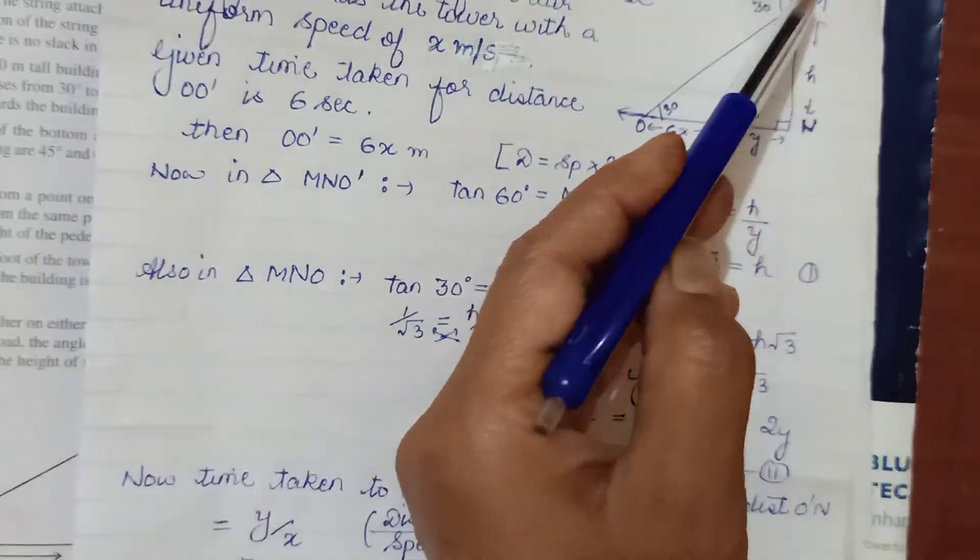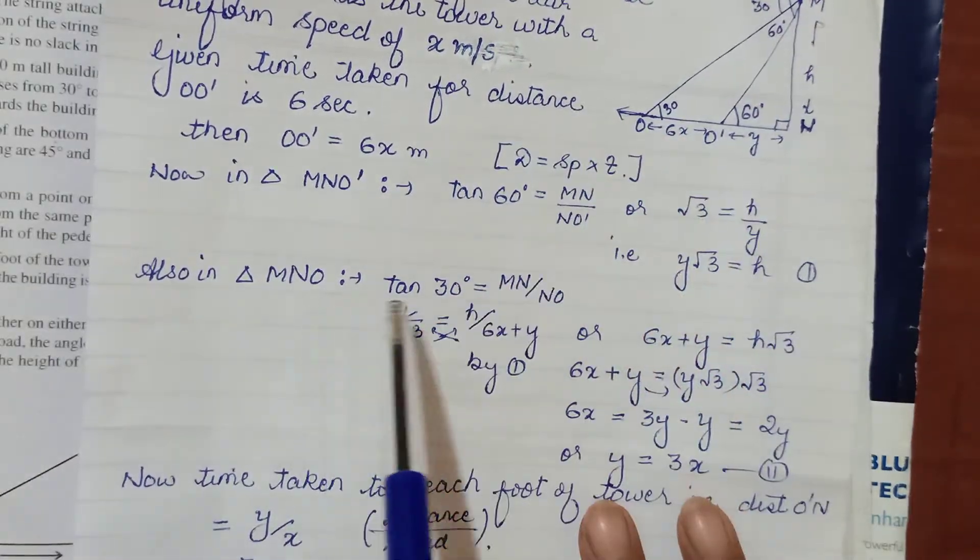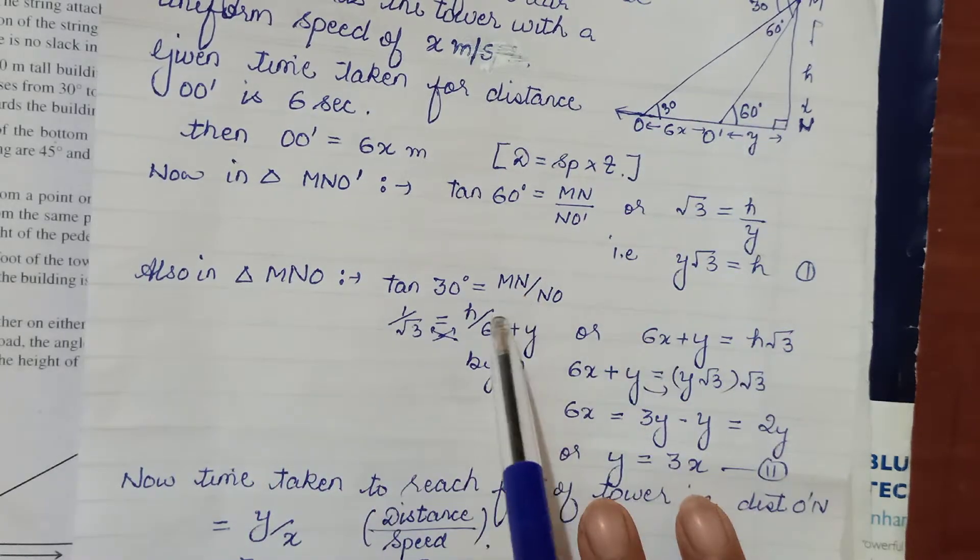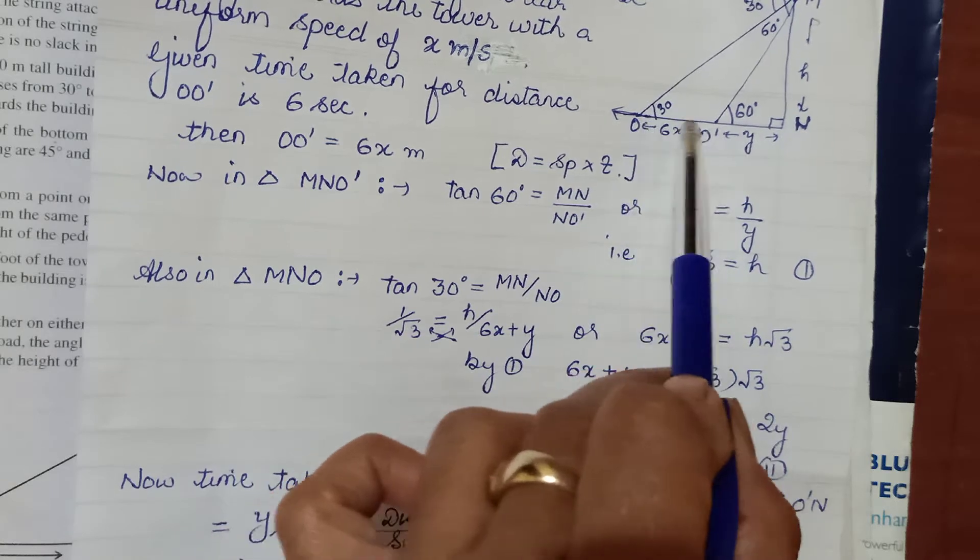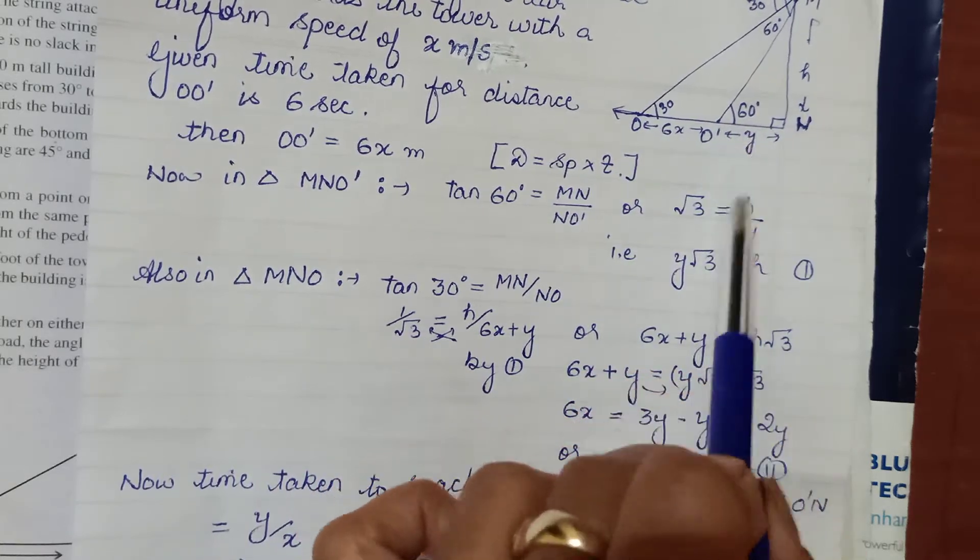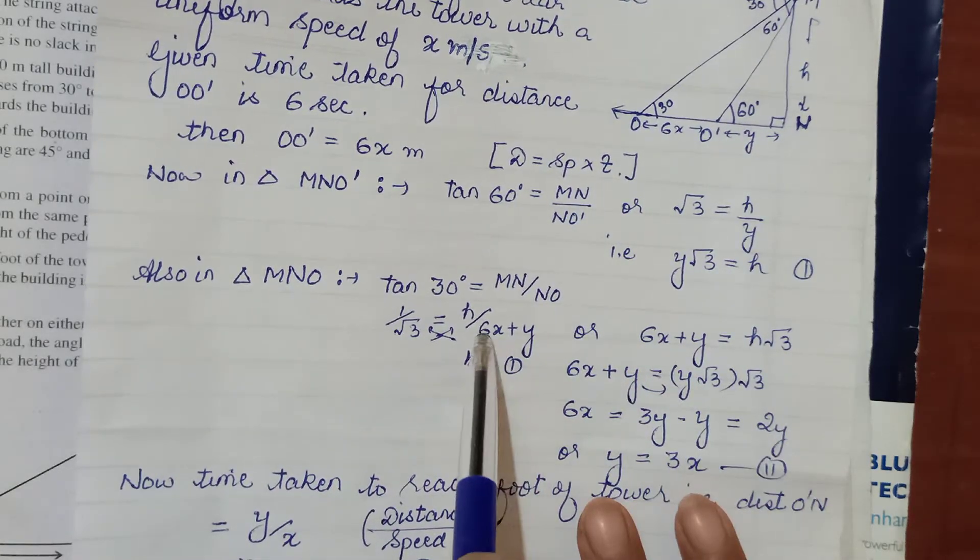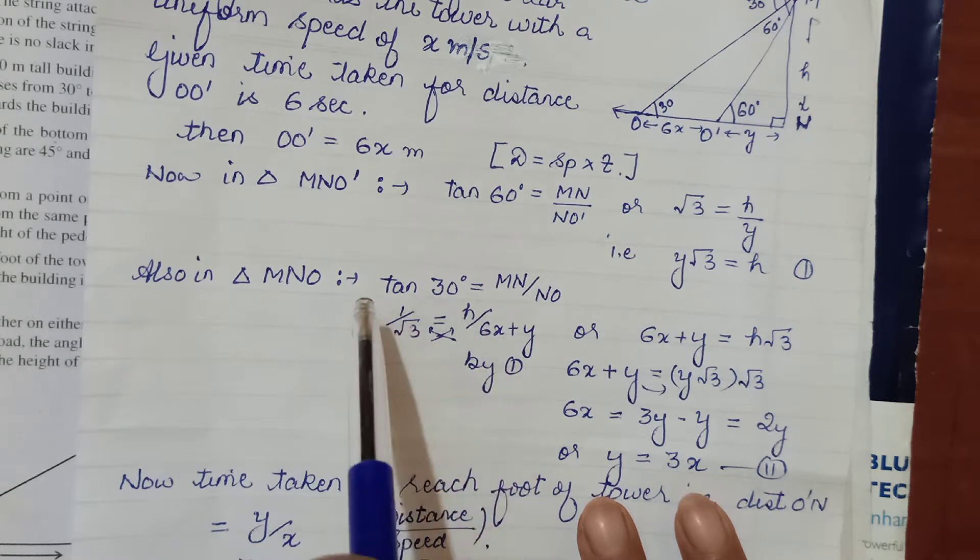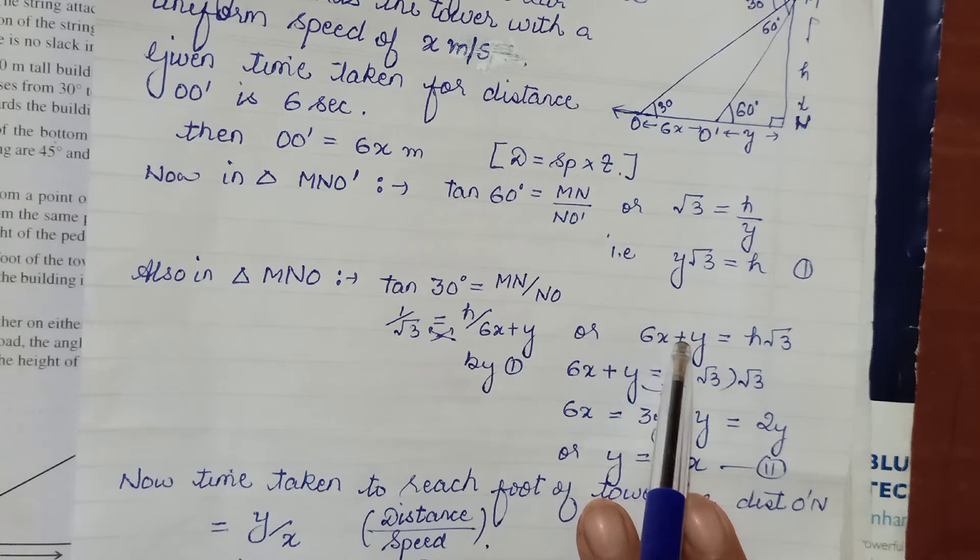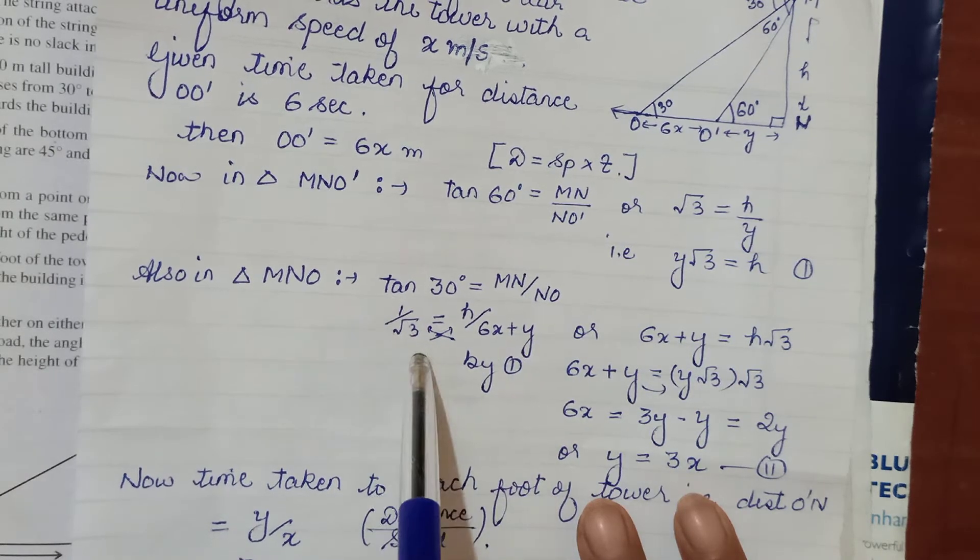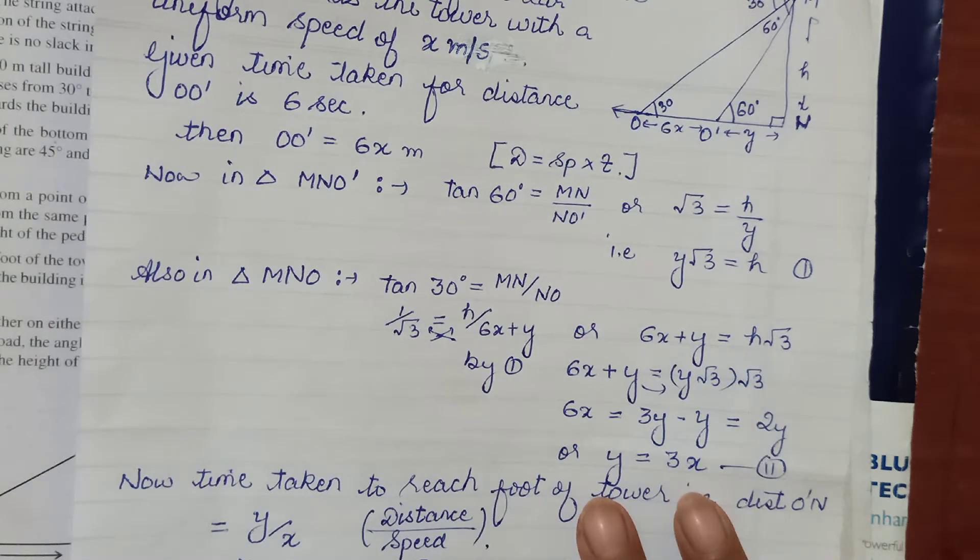The second one from the other triangle which is MNO. So in MNO, tan 30 will be again H upon base. The base from here is 6X, which we have calculated. This we have supposed as Y, so 6X plus Y will be the total. Now tan 30 is 1 upon root 3. That's the value. Cross multiplying, 6X plus Y goes here and root 3 multiplies here. So H is root 3 times (6X plus Y).